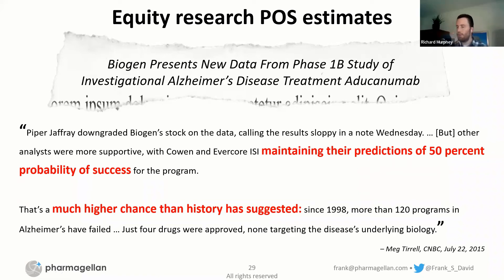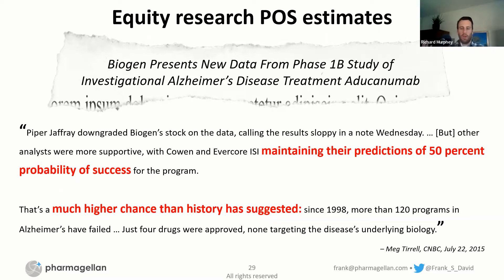And I think if the valuation or price target from equity research is in line with consensus, and you look at a number of equity research reports and analyze the assumptions they use — if you find stuff you can't quite wrap your head around, that can help you clarify your thinking about what the market actually believes about a particular variable, and whether you believe something different enough to have a different conclusion.